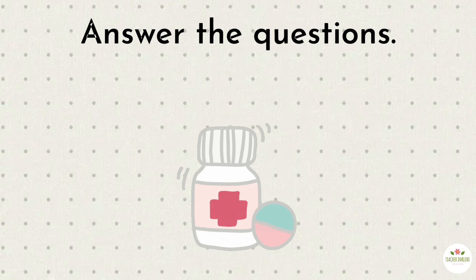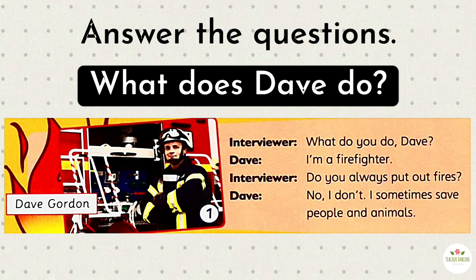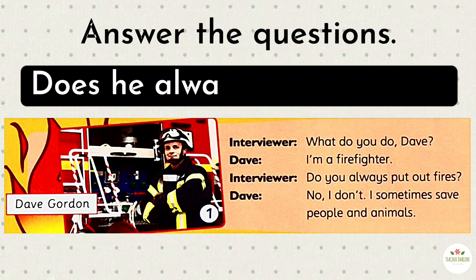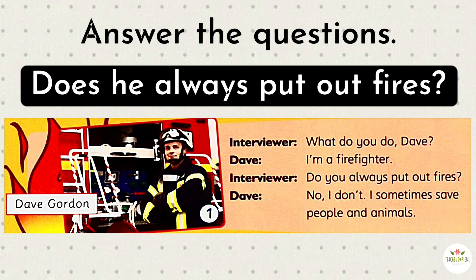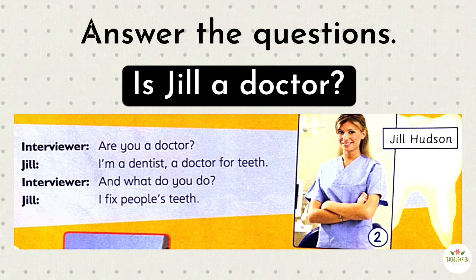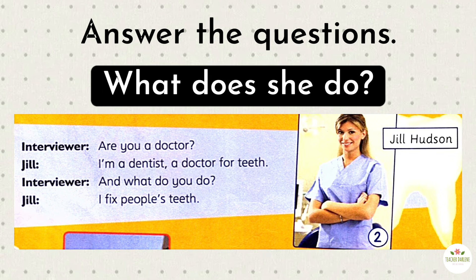Answer the questions. What does Dave do? He's a firefighter. Does he always put out fires? No, he doesn't — he sometimes saves people and animals. Is Jill a doctor? She's a dentist, a doctor for teeth. What does she do? She fixes people's teeth.